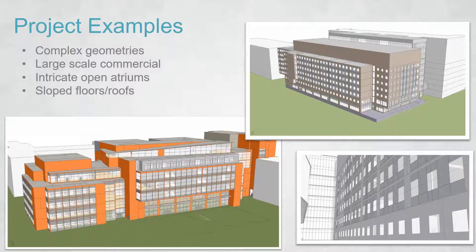Here are some project examples from Alberta. You can use complex geometries, large-scale commercial buildings, intricate open atriums — those are the toughest to pull off — as well as sloped floors and roofs. Every time you're dealing with a specific type of element, you need to address it individually, but so far everything has been possible and able to work.